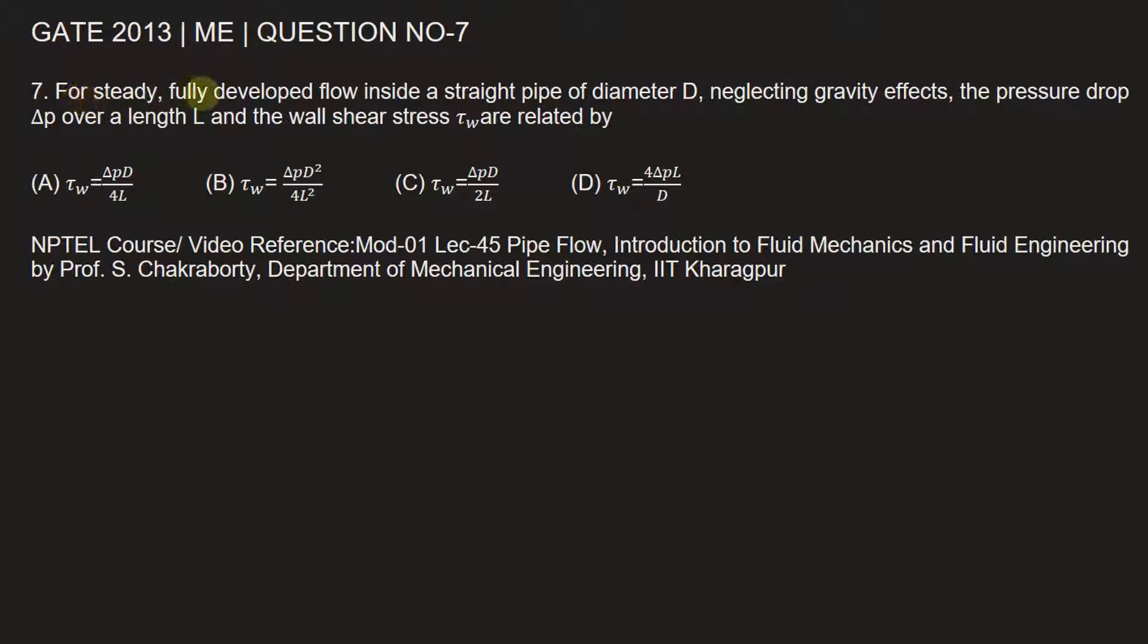The question is: for steady fully developed flow inside a straight pipe of diameter D, neglecting gravity effects, the pressure drop ΔP over the length L and the wall shear stress τ are related by. Four relations are given to us and which among these correctly represents the relation between pressure drop, the length, and shear stress in a pipe flow.